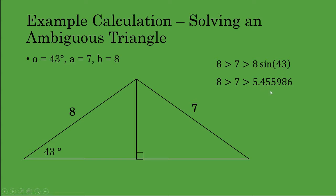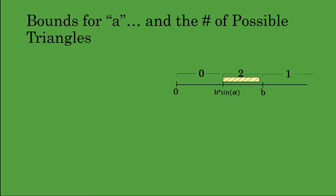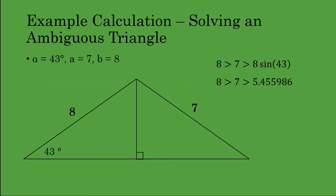We're seeing where 7 falls in comparison to 8 sine 43. You can compute 8 times the sine of 43 degrees, and that comes out to about 5.456 units. Therefore, 7 lies in between the values 8 and 8 sine alpha. We can see in the diagram that if a is between b and b sine alpha, then there are in fact two distinct triangles possible — that is our middle range in which we do have an ambiguous case. So for that reason, we can proceed.